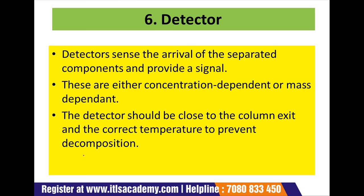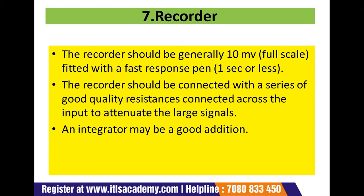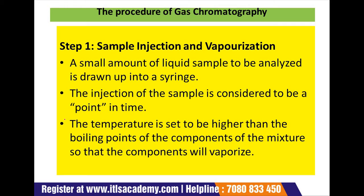The detector senses the arrival of separated components and provides a signal. These are either concentration-dependent or mass-dependent. The detector should be close to the column exit and at the correct temperature to prevent condensation. The recorder should generally be 10 mV full scale, fitted with a fast response span of 1 second or less. The recorder should be connected with a series of good-quality resistances across the input to attenuate large signals. An integrator may be a good addition.